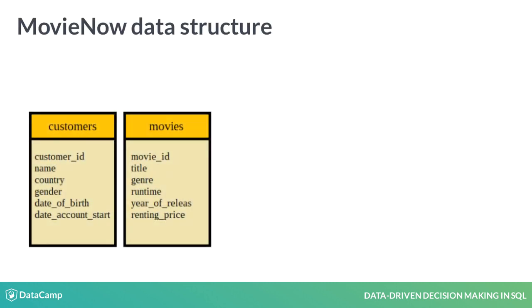The columns from the table Movies include a unique identifier Movie ID, the title of the movie, the movie genre, the runtime, the release year, and finally what it costs to rent the movie.